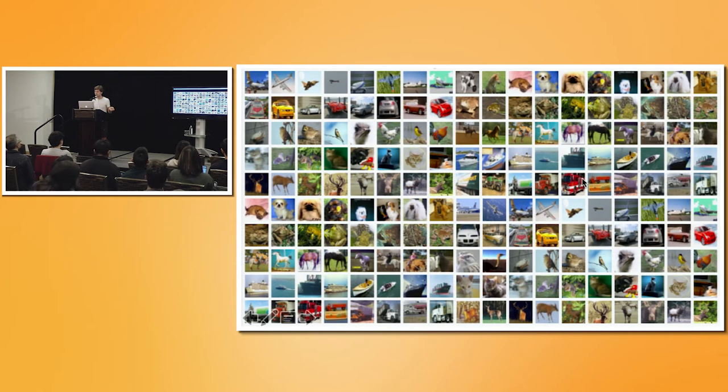All right, so here's a problem. We have a large data set, for example, a collection of images, and we want to build a generative model that captures the structure in this data set. Hopefully one that will generalize to produce new images that we haven't seen before. So how do we go about doing this?